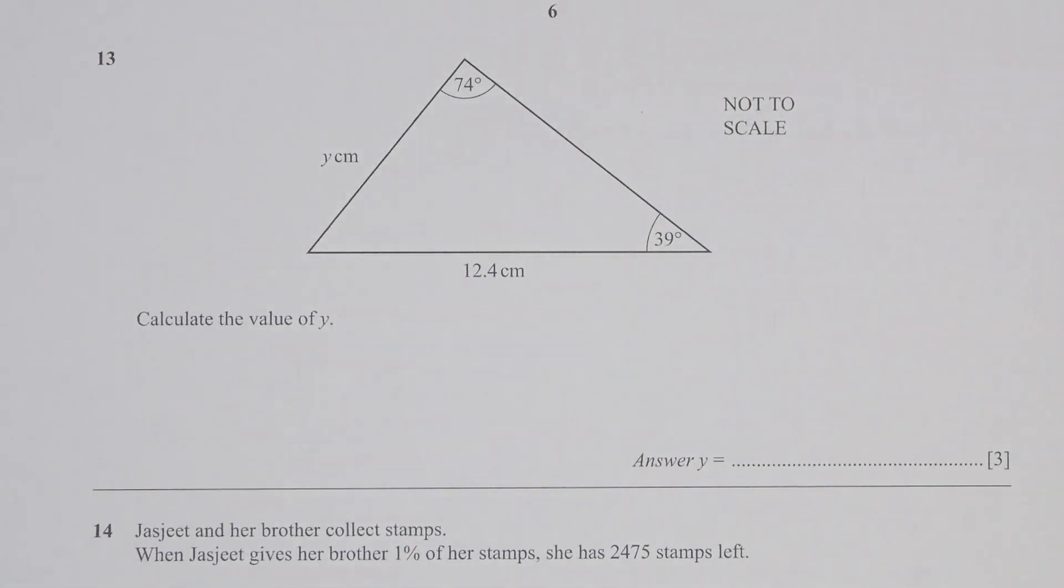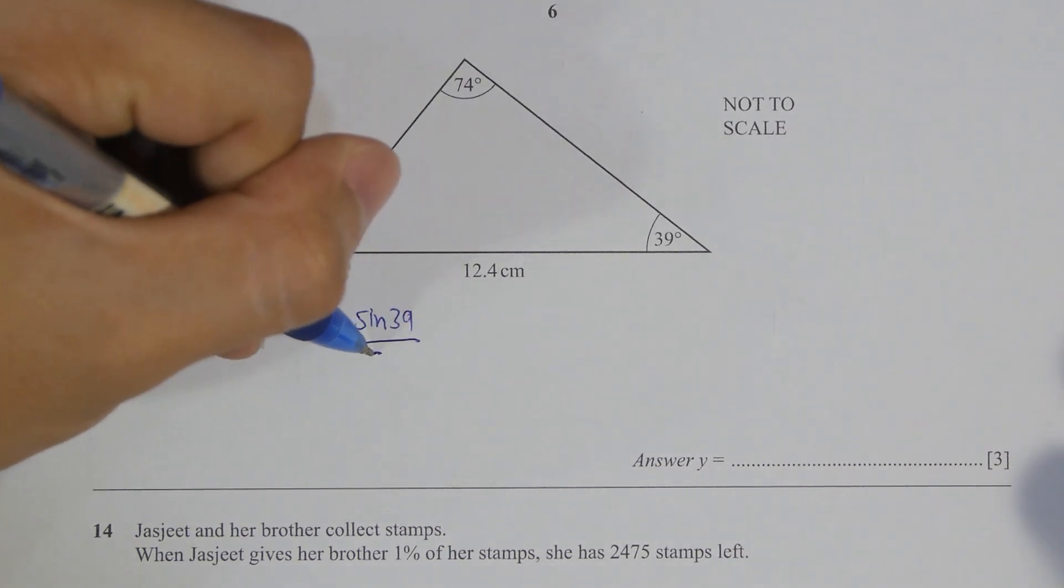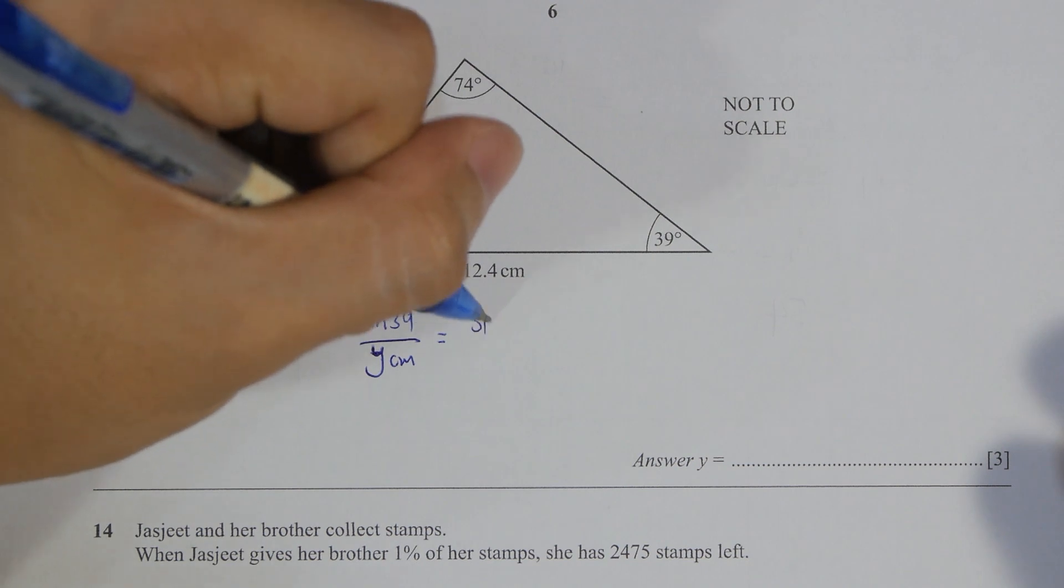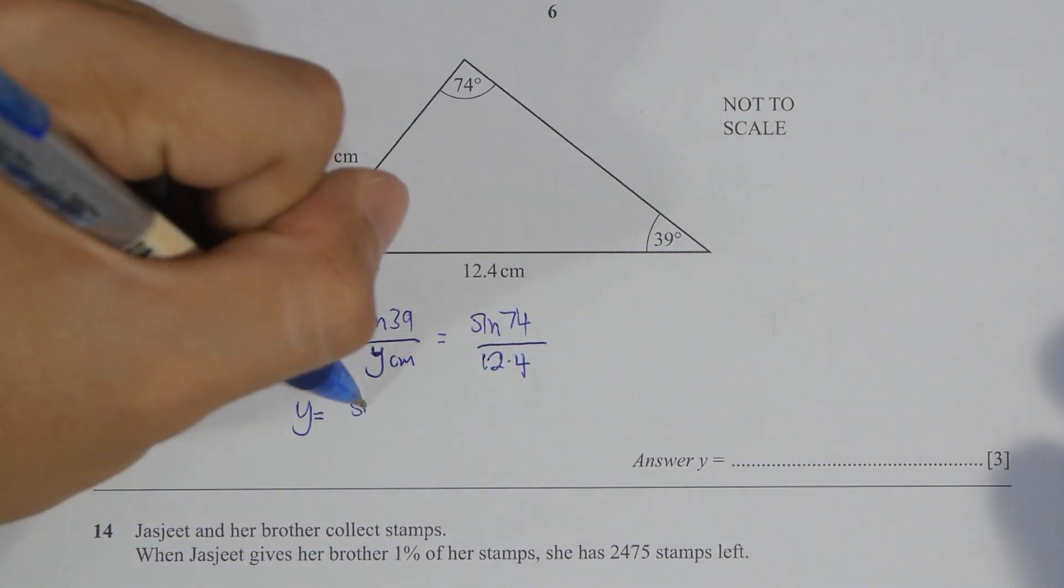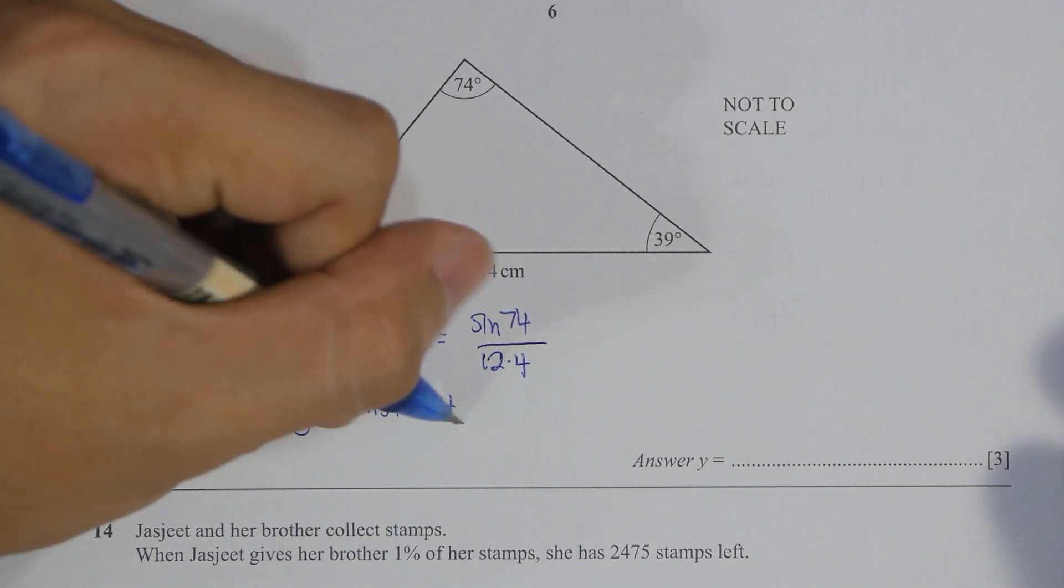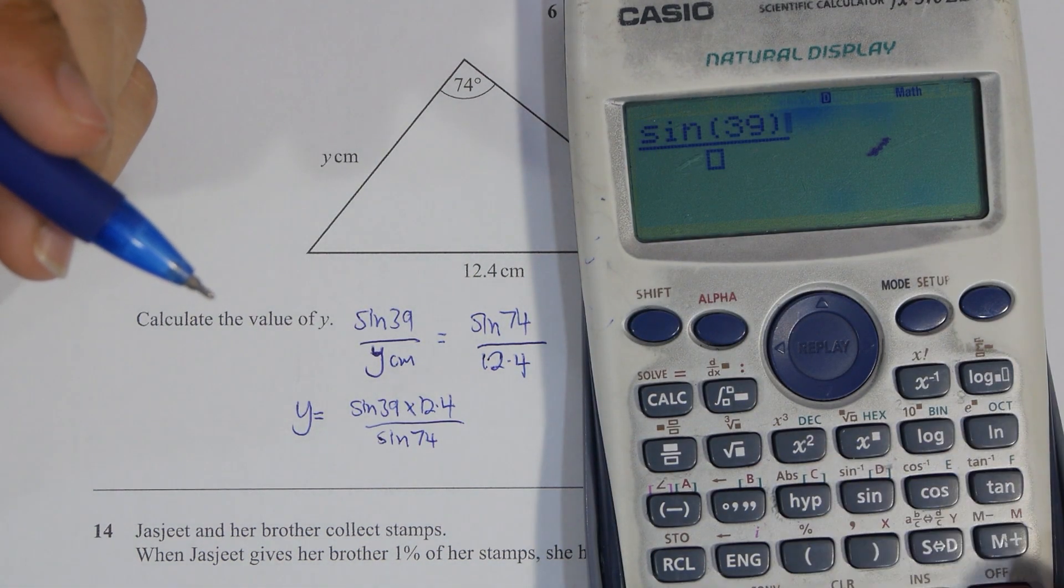Question 13, this one simply uses sine rule, then you should be able to find the answer. So sine 39 over y equals sine 74 over 12.4. So the calculation, y's result will actually be 8.12.